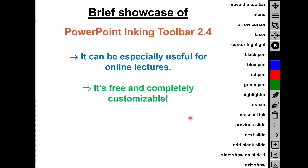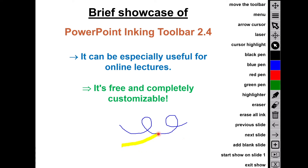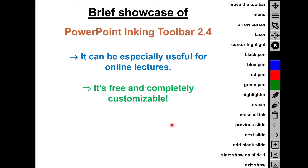For example, the laser is currently activated, and then I can go and use the toolbar to select the blue pen, and now I can write with the blue pen and still have the laser activated. You can also use the highlighter in the same way, or use the eraser in the same way.